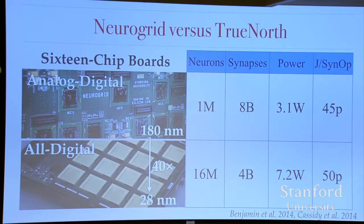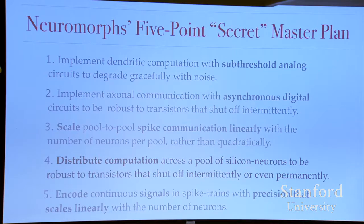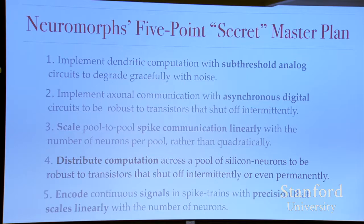NeuroGrid was really designed to model biophysically detailed networks — different kinds of ion channels, multi-compartment neurons. It was funded by NIH. That's what allowed us to reach million-neuron-billion-synapse scale — NeuroGrid was the first million-neuron neuromorphic system. Now the question is how to map computations onto these neuromorphic chips.